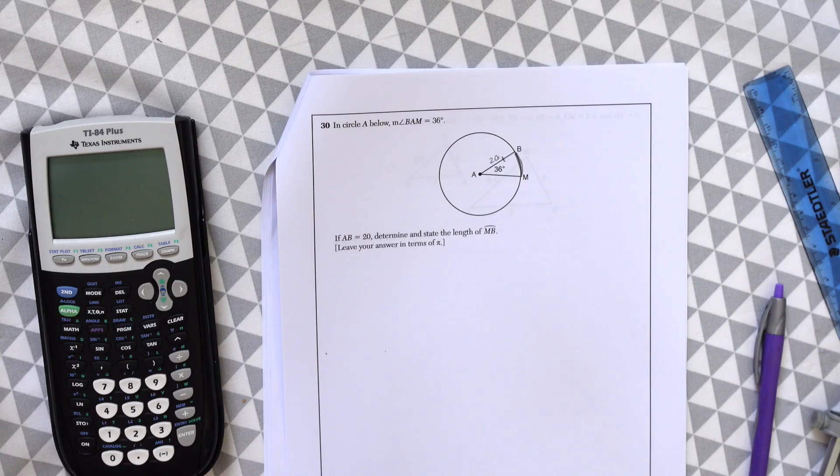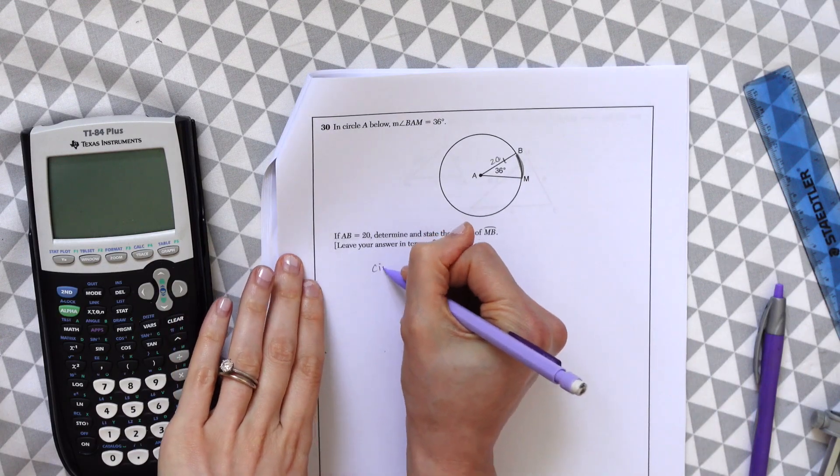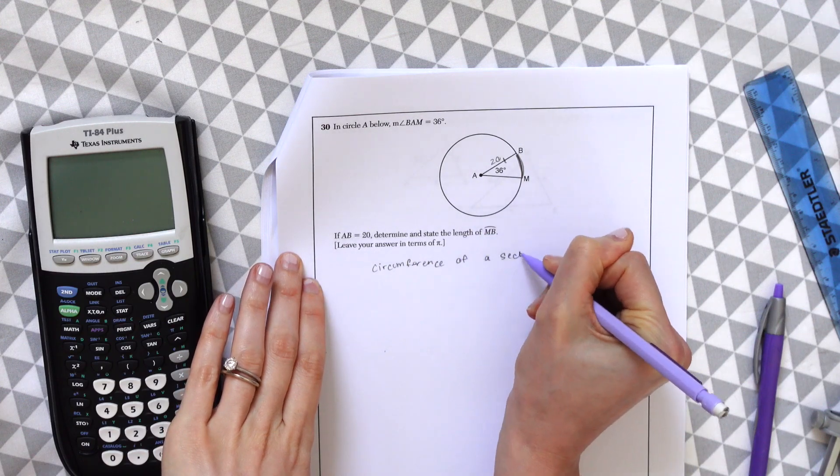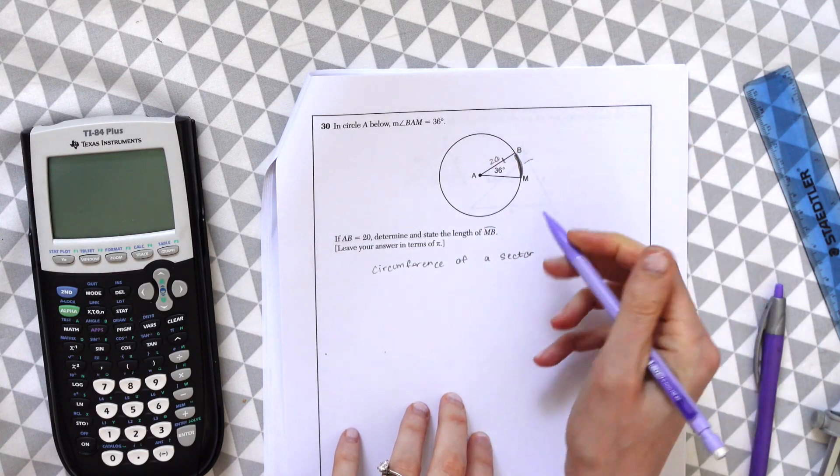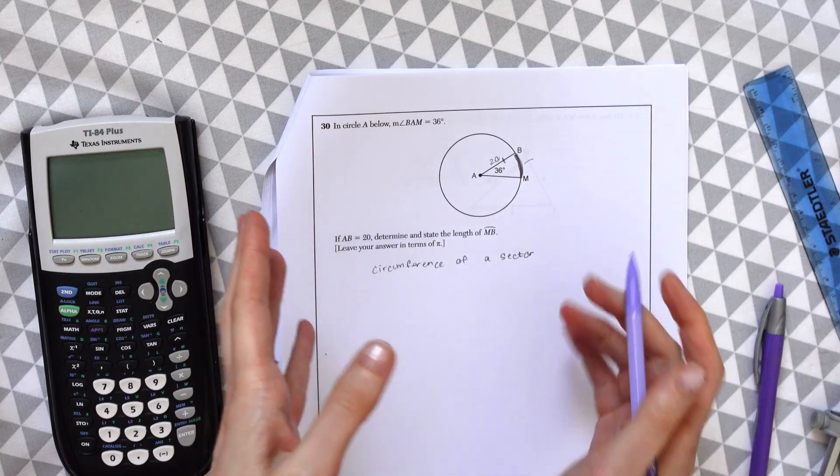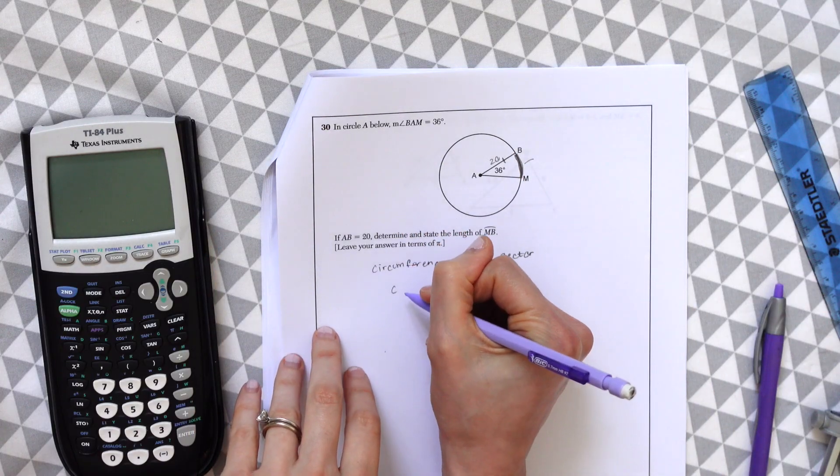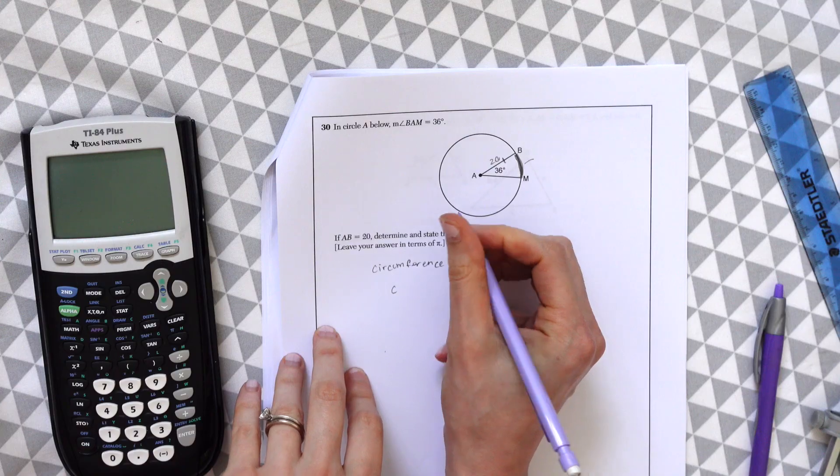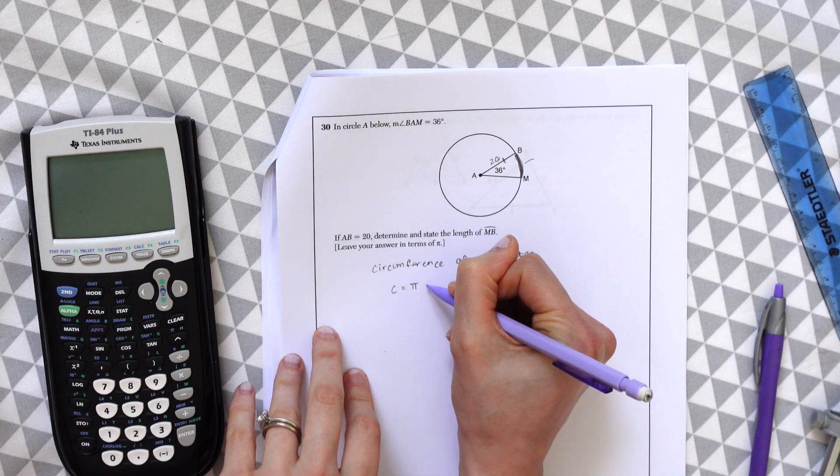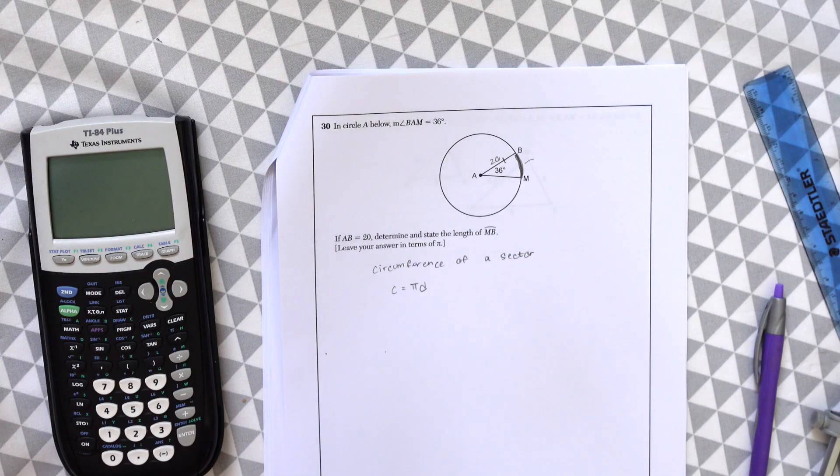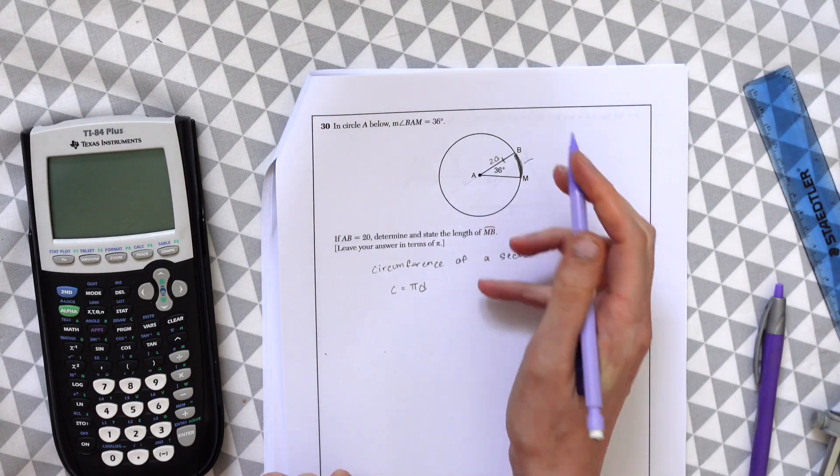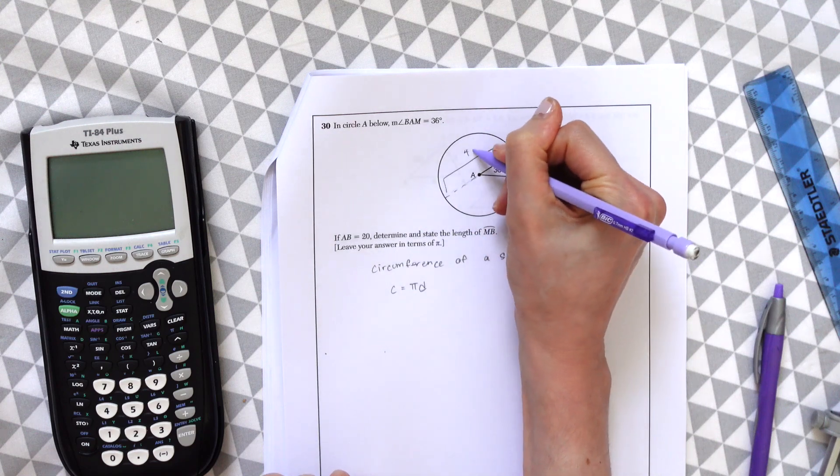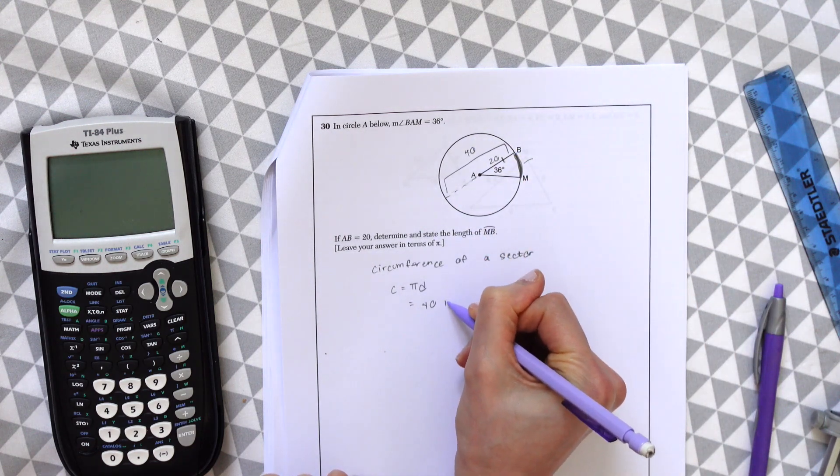So really the circumference, the measure of this arc is a circumference of just a little piece of the pie of this whole circle. So when you think about the circumference formula, the circumference formula is pi times the diameter. Cherry pie is delicious. That's how I remember it. Pi times the diameter. So we know the diameter here is 40 because the radius is 20. 40 times pi.